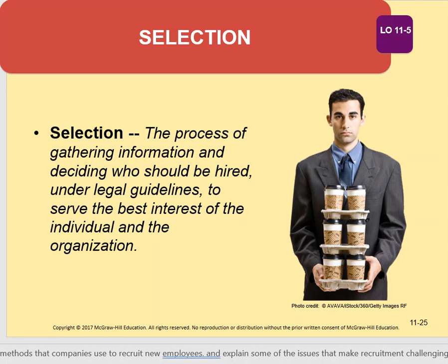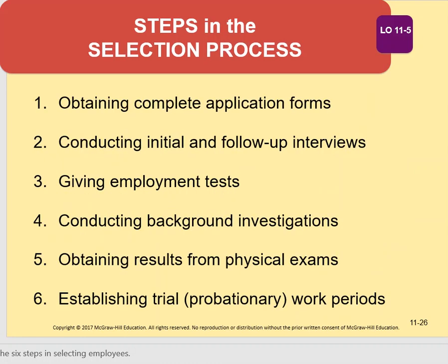The next step in the strategic plan is selection. After you've recruited, you must select. Selection is the process of gathering information and deciding who should be hired to serve the best interests of both the individual employee and the company. The steps include completing an application form, conducting initial and follow-up interviews, possibly giving a test, conducting a background investigation, a physical exam, and then establishing a trial or probationary work period.